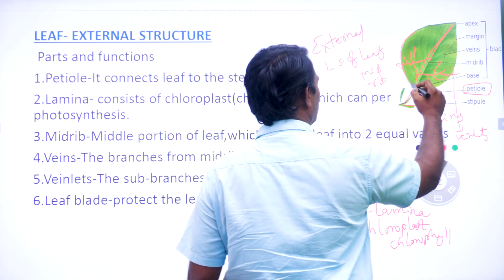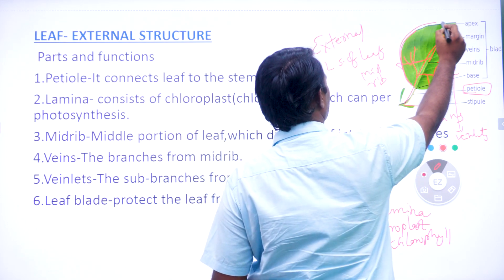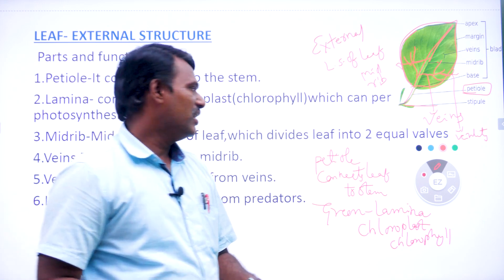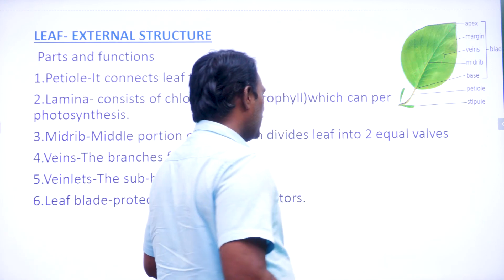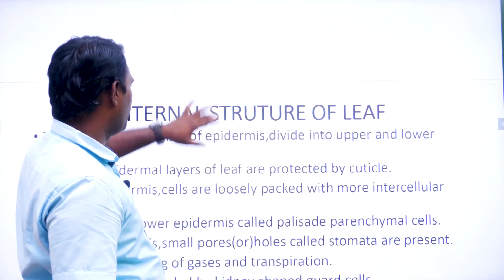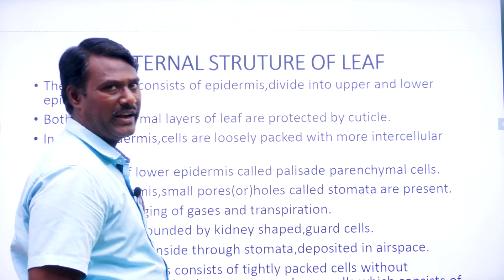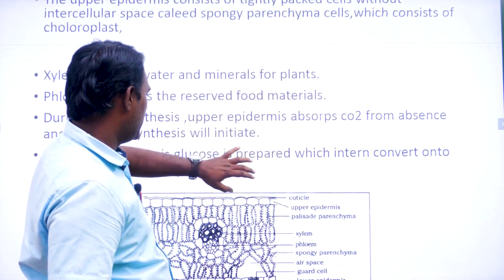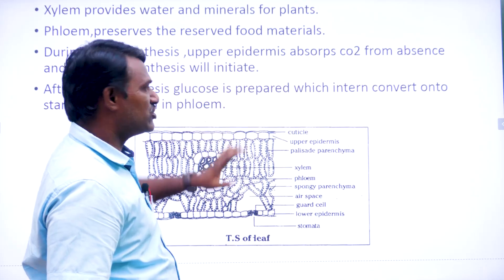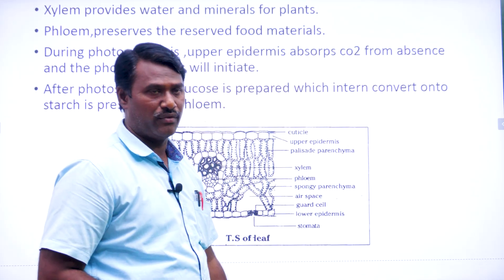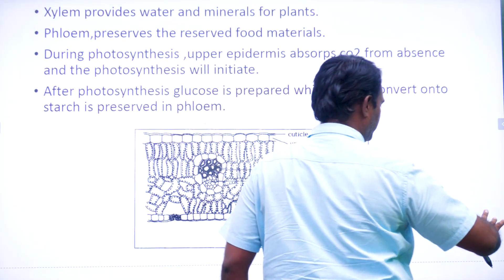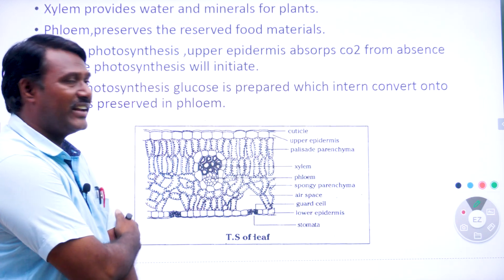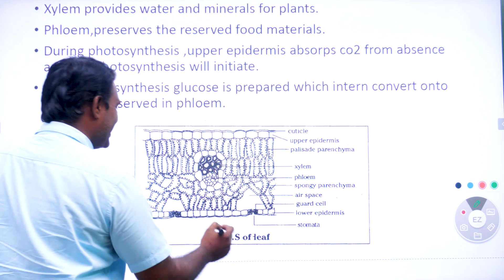The tip of the leaf we can call the apex. So this is about the external structure of the leaf. Next we are going to see the very important internal structure of the leaf — also called TS of leaf.